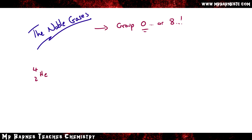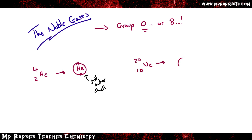When you look at the electronic configuration of the noble gases you'll see something really unique about them. Starting with helium, it's got two electrons in its outer shell — its first shell. Remember the first shell can only hold two, so it's got a full outer shell. If you do the same for neon, it's got ten electrons: two go in the first shell, eight in the second — again you can see it's got a full outer shell.